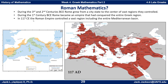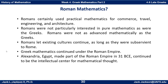By the 1st century BCE and certainly into the 1st century of the Common Era, Rome had taken over the Greek world. Romans certainly used practical mathematics for commerce, travel, engineering, architecture, and agriculture. But Romans were not particularly interested in pure mathematics as were the Greeks — they were not as mathematically advanced. Because they didn't value it as much, they didn't bring in Greek tutors for the children of rulers as the Greek rulers did.